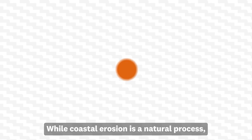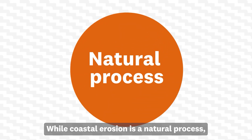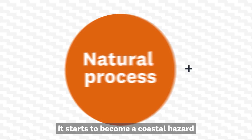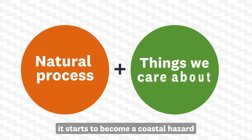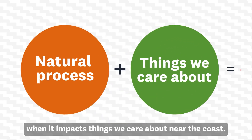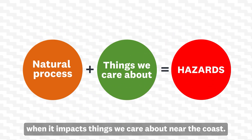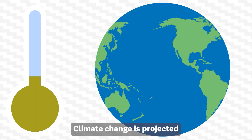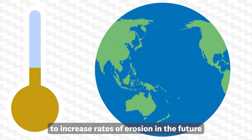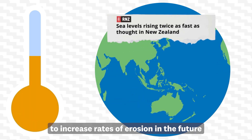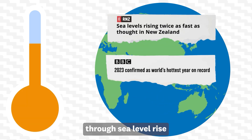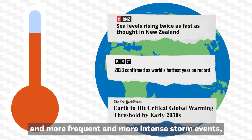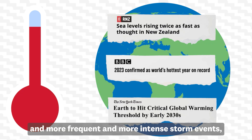While coastal erosion is a natural process, it starts to become a coastal hazard when it impacts things we care about near the coast. Climate change is projected to increase rates of erosion in the future through sea level rise and more frequent and more intense storm events.